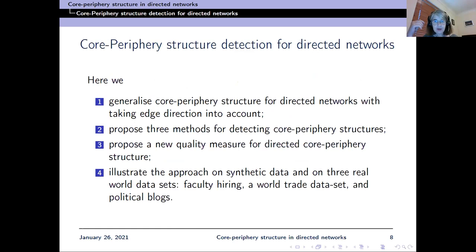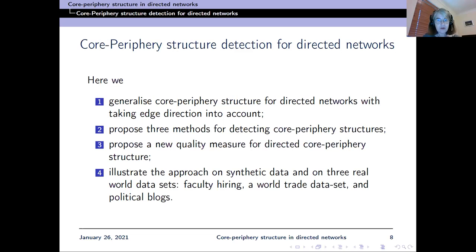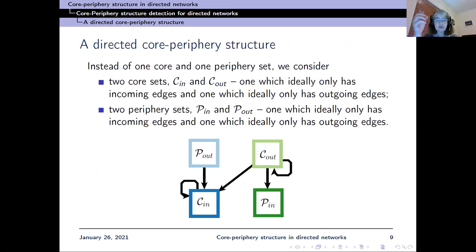Here we look at a different structure for directed networks that takes directionality into account, and we propose methods for detecting this structure. We also introduce a new quality measure for directed core-periphery structure, which is a bit like modularity. I'll show how this works on synthetic data briefly, and we also look at three real-world datasets: faculty hiring, world trade, and political blocks.